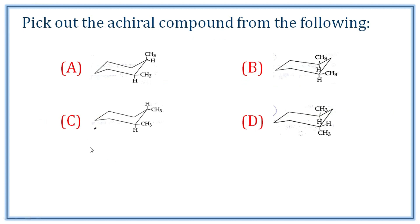Next question on stereochemistry: pick out the achiral compound from the following. The essential condition for chirality is the absence of a plane of symmetry — a molecule with a plane of symmetry is achiral. We examine four compounds: Option A is cis-1,2-dimethylcyclohexane; Option B is cis-1,3-dimethylcyclohexane.